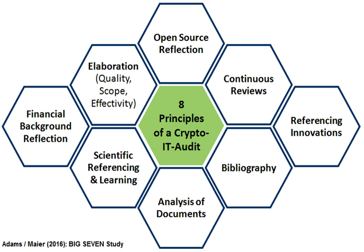In an IS environment, there are two types of auditors and audits: internal and external. IS auditing is usually a part of accounting internal auditing and is frequently performed by corporate internal auditors. An external auditor reviews the findings of the internal audit as well as the inputs, processing, and outputs of information systems. The external audit of information systems is frequently part of the overall external auditing performed by a certified public accountant firm. It focuses on issues like operations, data integrity, software applications, security, privacy, budgets and expenditures, cost control, and productivity. Guidelines are available from the Information Systems Audit and Control Association.